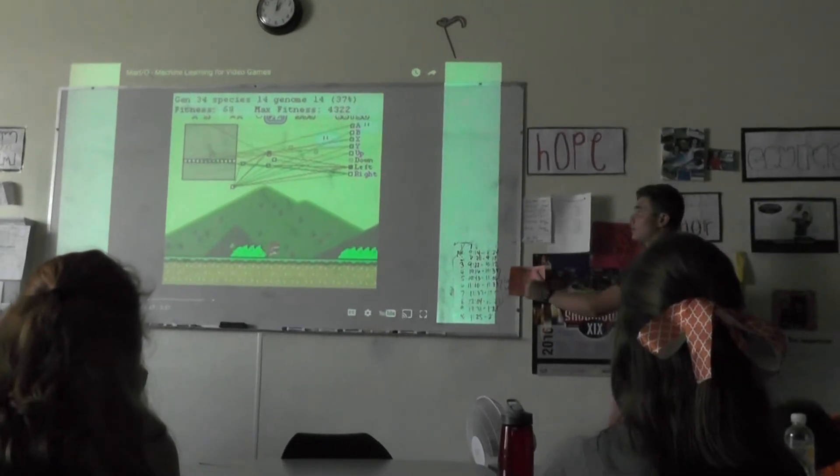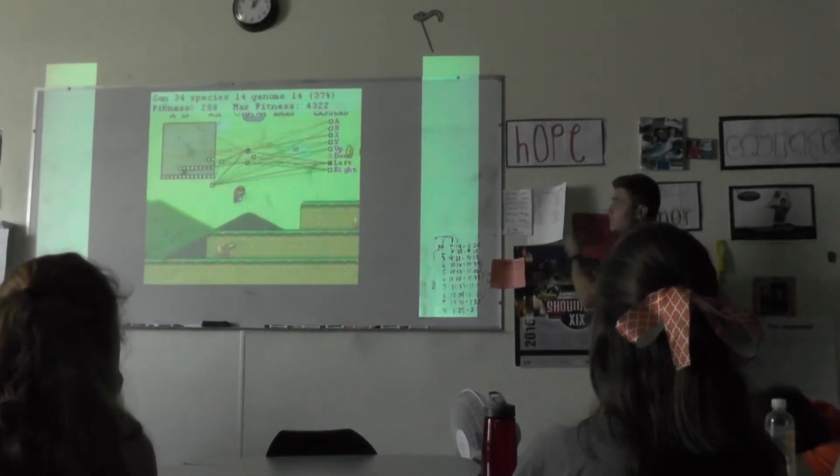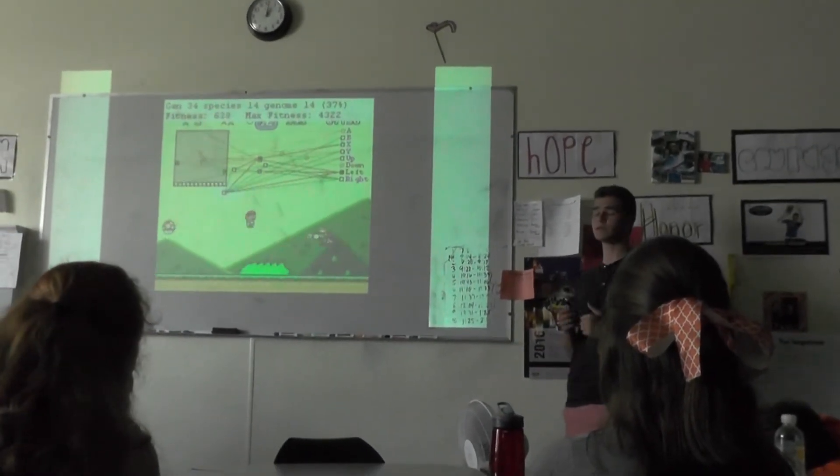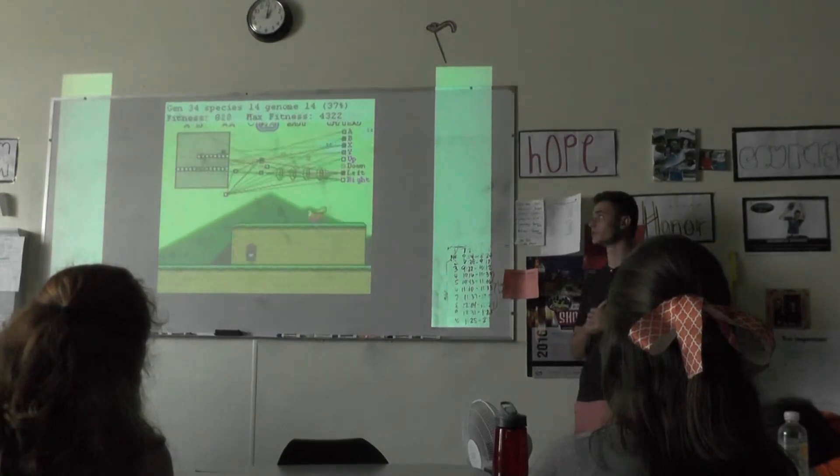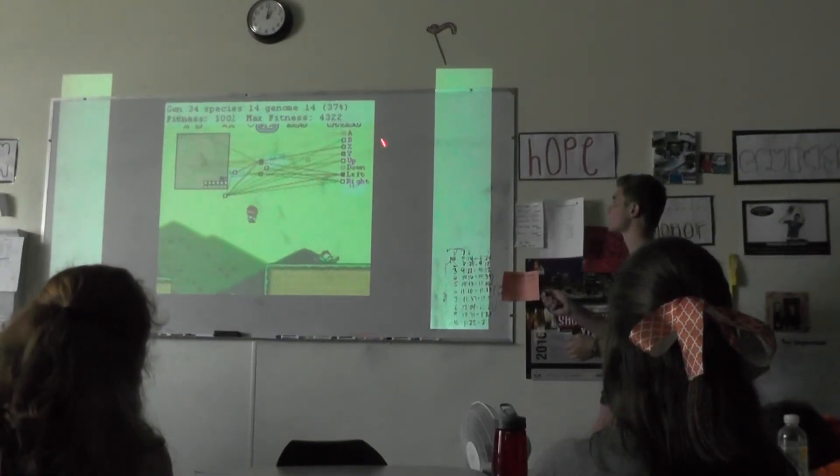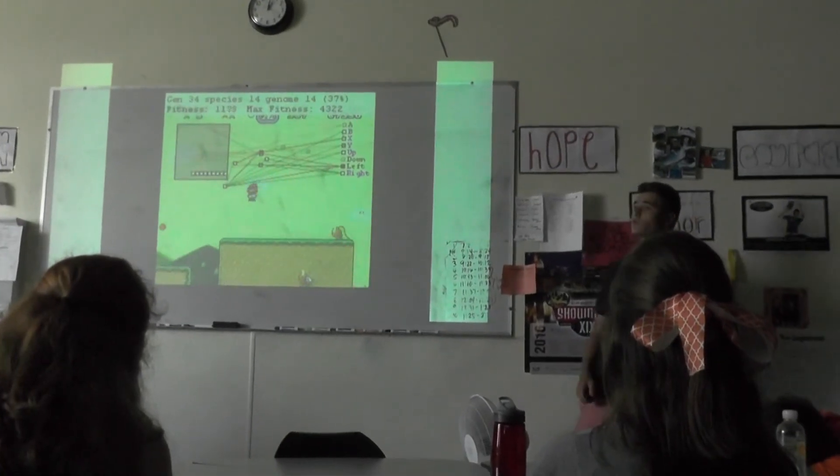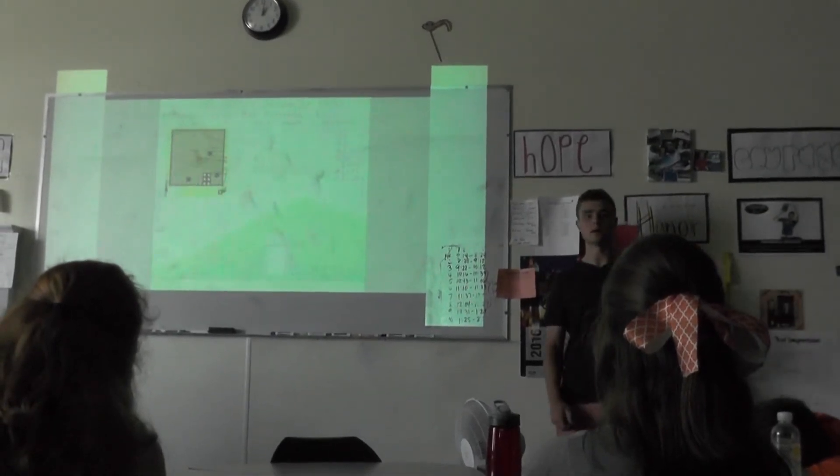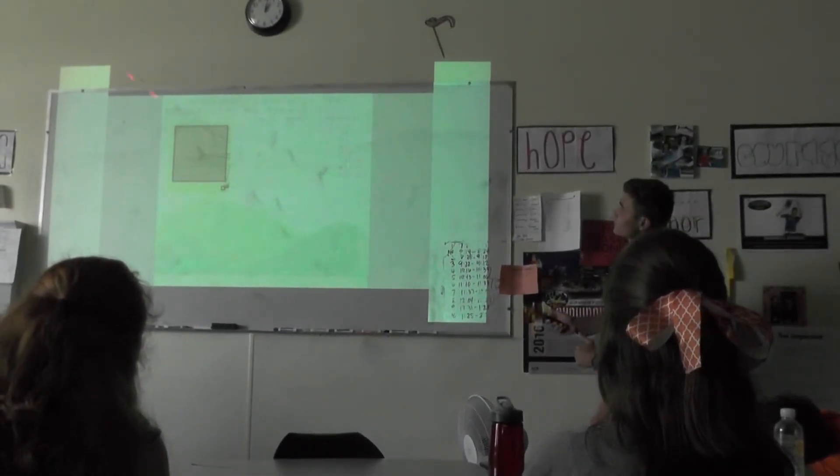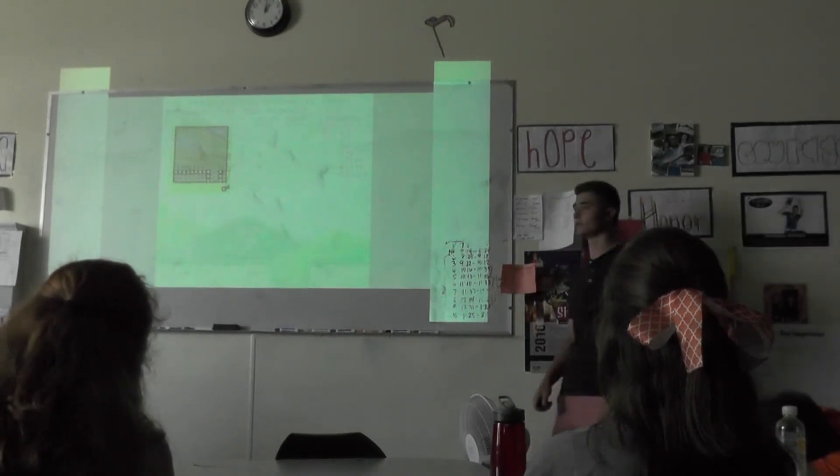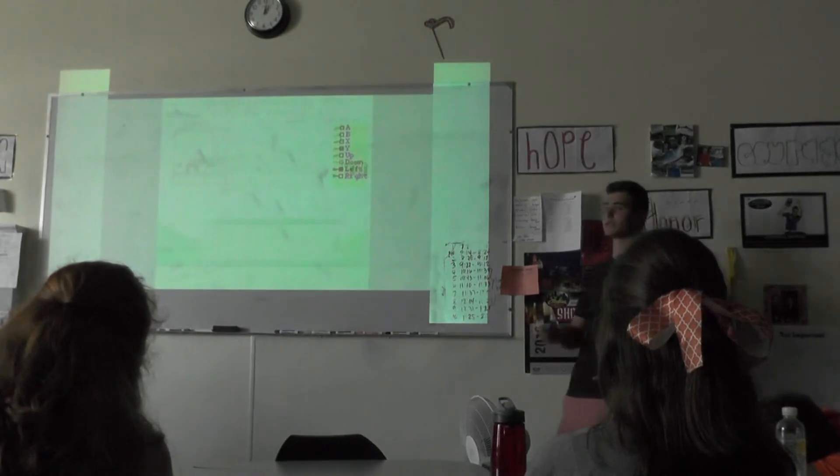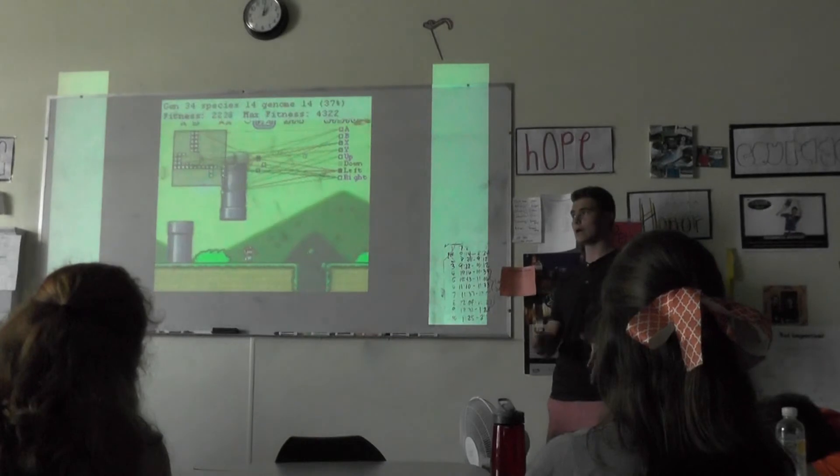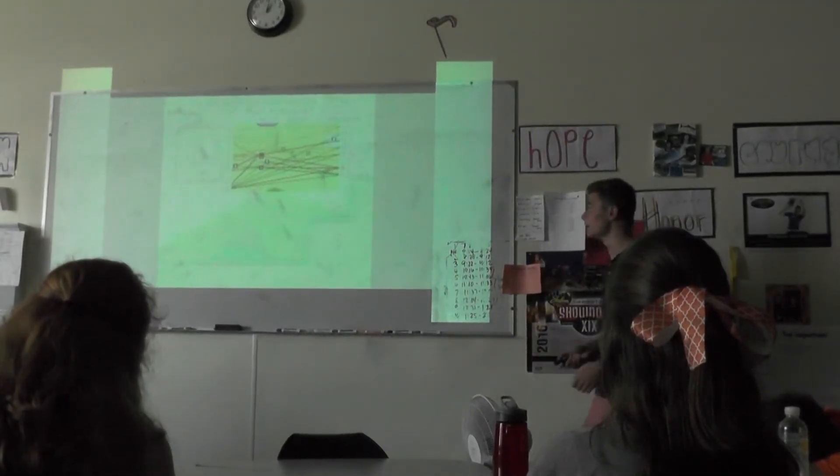It starts off here with actually, he's playing Mario. Mario is entirely controlled by the computer. You can see all the buttons on the right up here. And this took 24 hours for the machine to learn the entire level and get it entirely correct on that drive. It took 34 generations, 14 species and 14 genomes, that just basically means that it went through the 34 generations because it made it past a certain point based upon past experiences. But this was the one that actually made it.